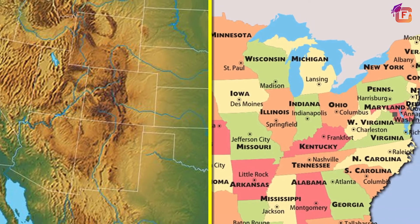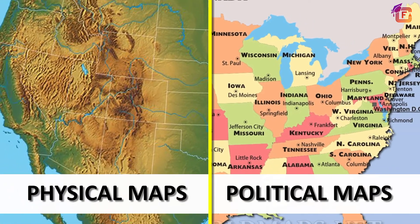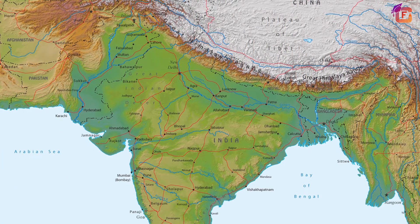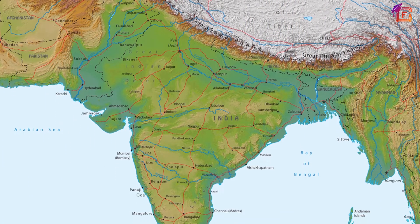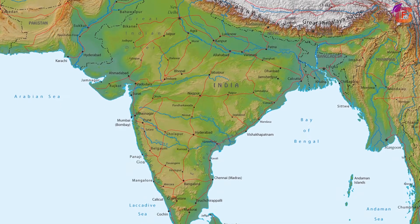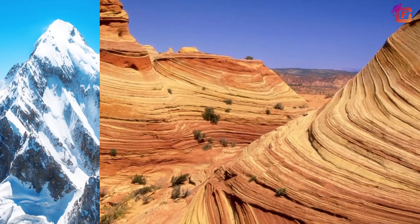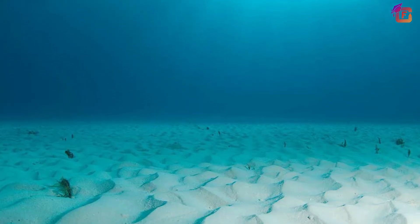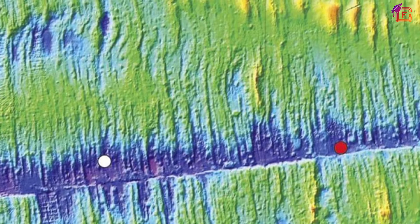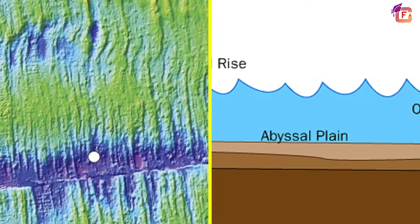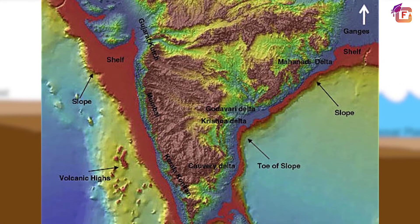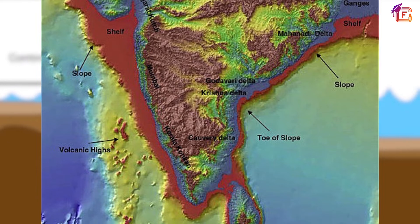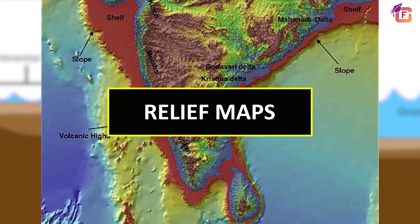The two most important thematic maps are physical maps and political maps. Physical maps are those maps which show natural features of the earth. Physical features on land include mountains, plateaus, plains, rivers, lakes, etc. Some features of the ocean floor include ridges, abyssal plains, and many more. When such maps show heights, depths, or undulating features of land, they are called relief maps.